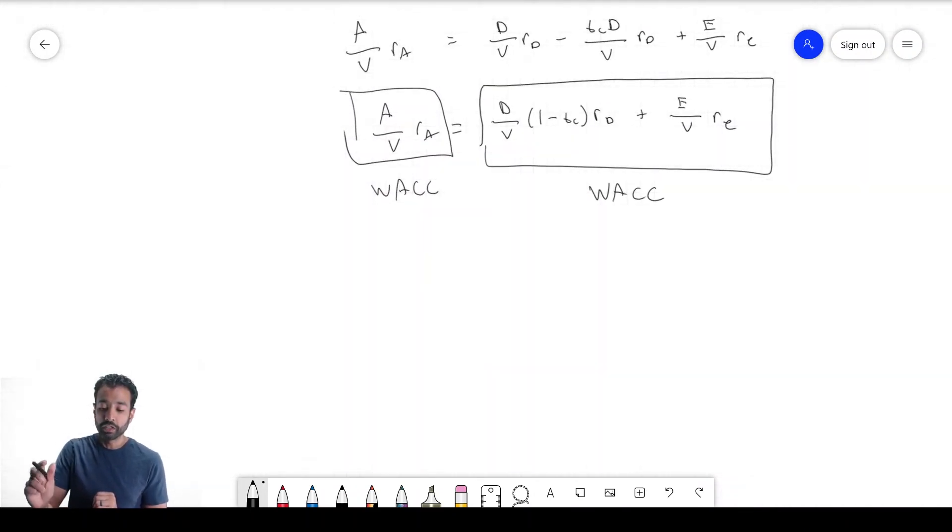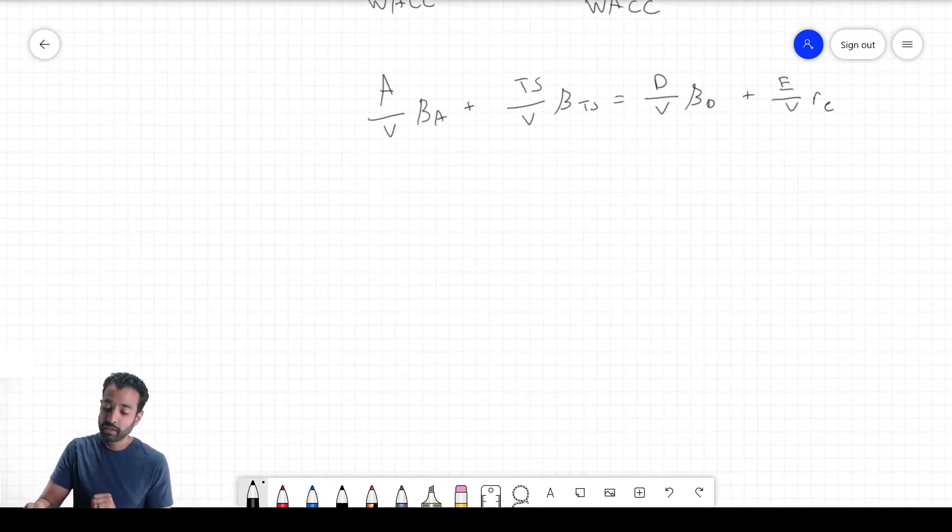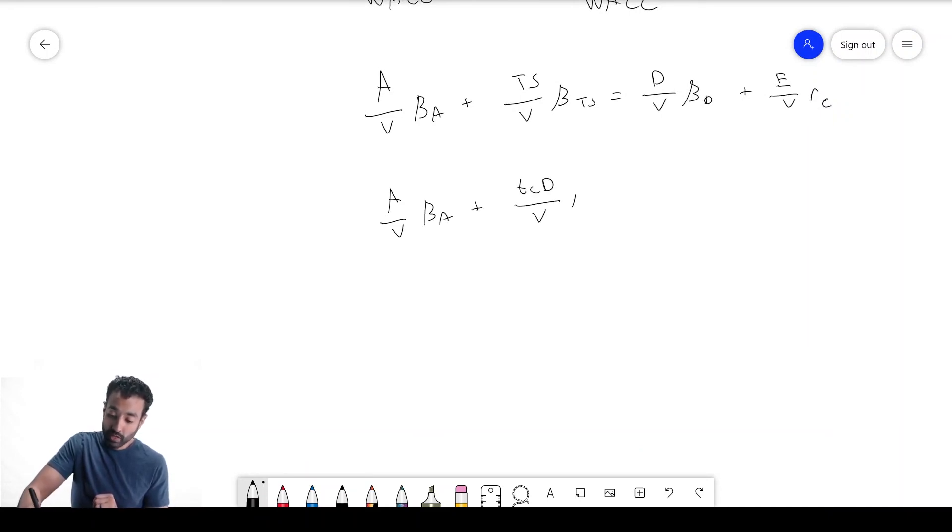Something else you can do—when you're looking at betas, you can do the same thing. We can do the same exact shortcuts that we did before. A over V times beta A plus TCD over V times beta D equals D over V times beta D plus E over V times beta E. You can manipulate this however you want to get whichever one of these values you want. You don't have to worry about the unlevering formula, the levering formula. It's all coming from this.